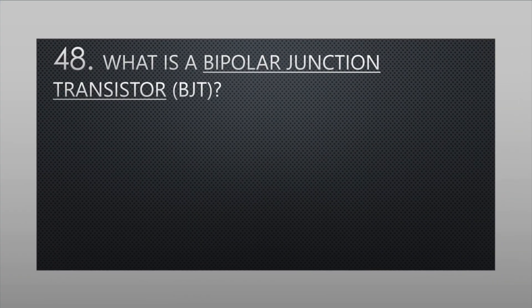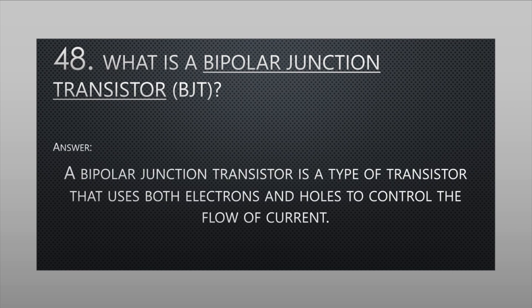What is a bipolar junction transistor or BJT? A bipolar junction transistor is a type of transistor that uses both electrons and holes to control the flow of current.